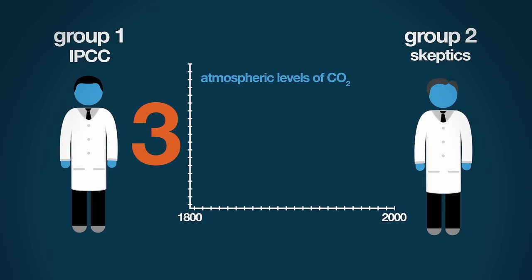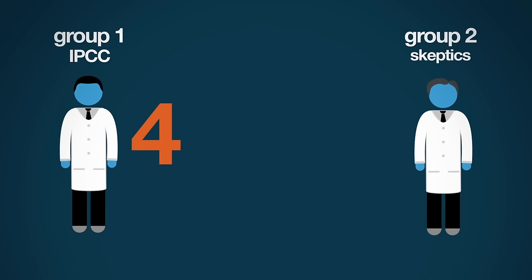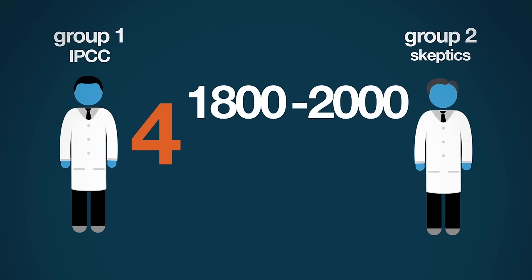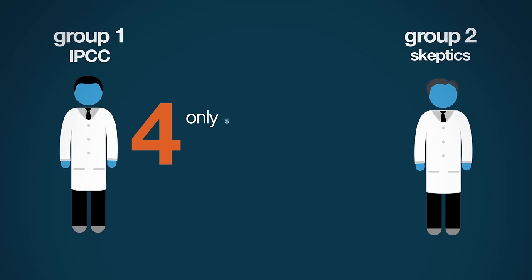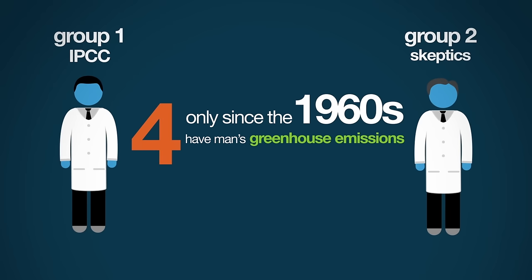Three, atmospheric levels of CO2 have been increasing since the end of the Little Ice Age in the 19th century. Four, over this period, past two centuries, the global mean temperature has increased slightly and erratically by about 1.8 degrees Fahrenheit or 1 degree Celsius. But only since the 1960s have man's greenhouse emissions been sufficient to play a role.